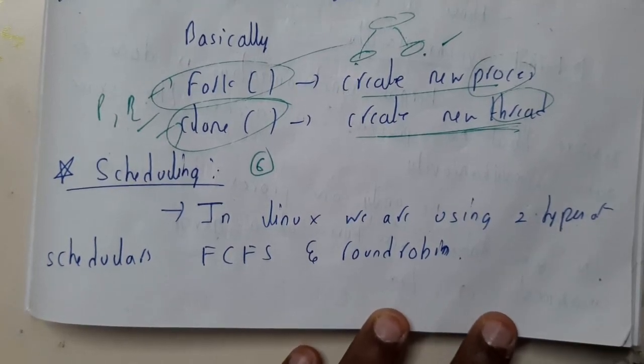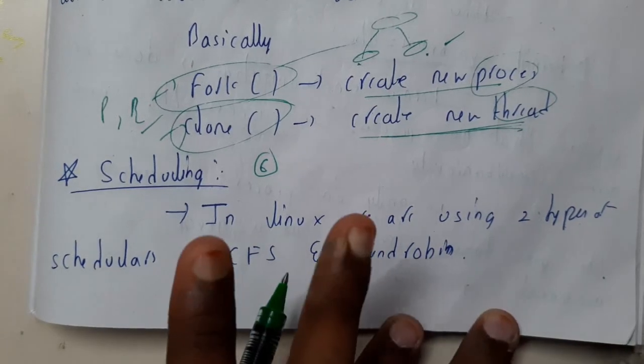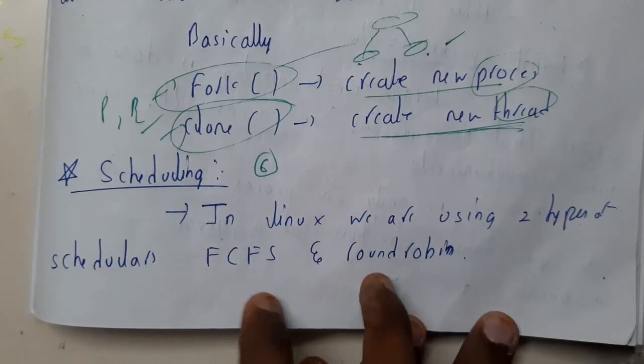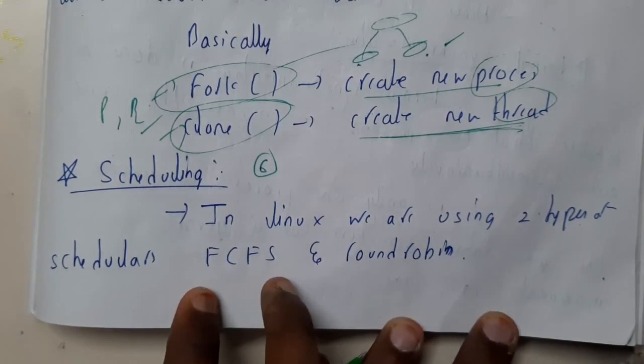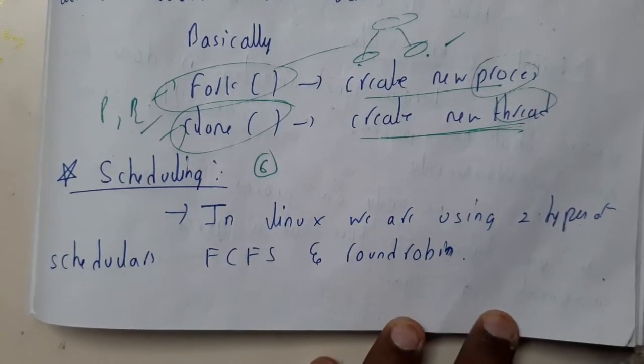Hello guys, we are back with our next tutorial. In this tutorial, let us go through schedulers in Linux. In Linux we are using two types of schedulers. Basically, these are the two popular schedulers which we use after version 2.5, FCFS and round robin.